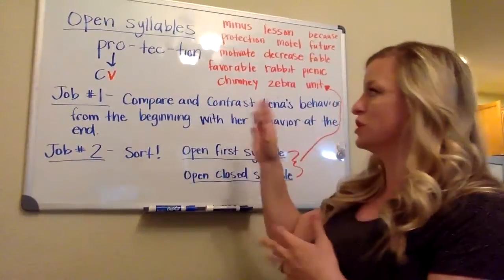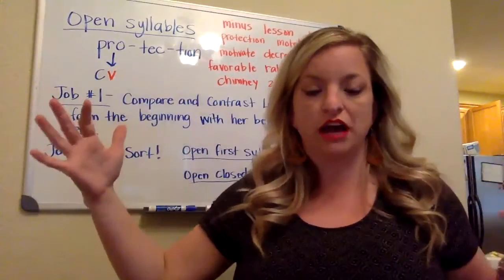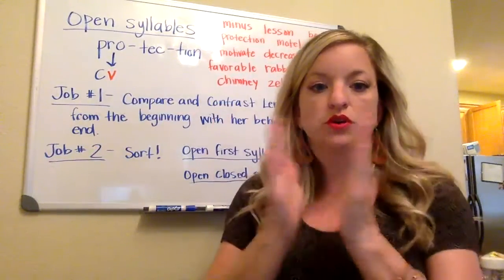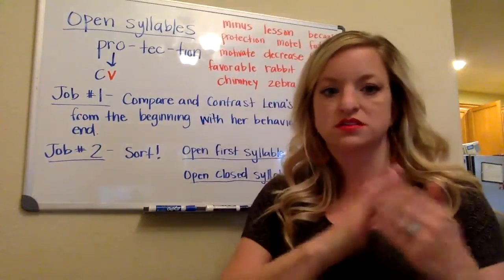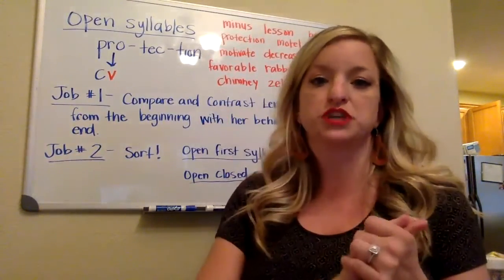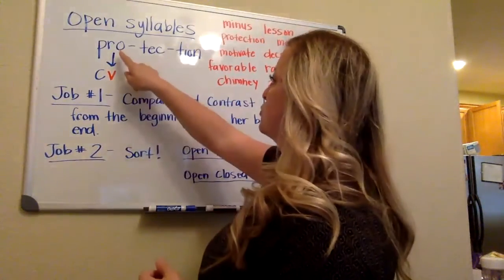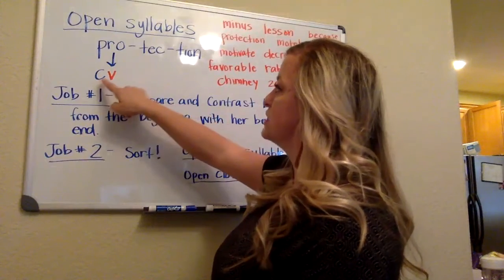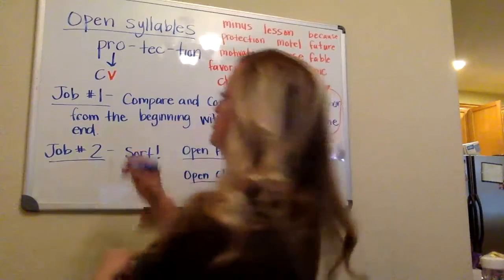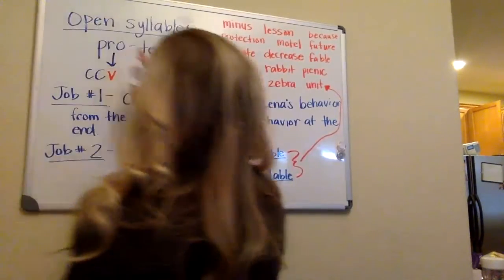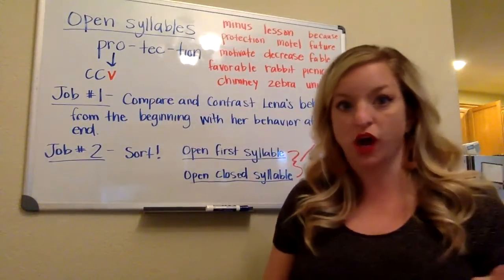With an open syllable, I gave you the word 'protection' as an example. Protection has three syllables, but I only want you to focus on the very first syllable. 'Pro' is the first syllable — it's consonant, consonant, vowel. A, E, I, O, and U are your vowels, sometimes W, sometimes Y.